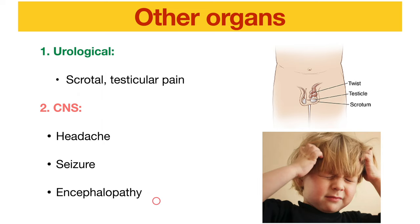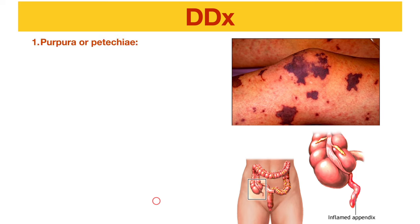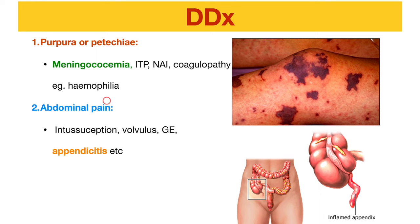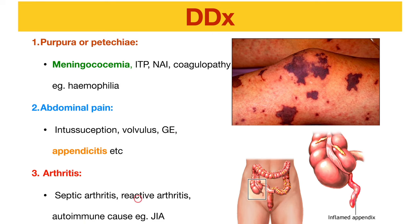For differential diagnosis: if you see purpura or petechiae, one of the most important conditions to consider is meningococcemia, as it is life-threatening. When you see non-blanchable purpura, first think about meningococcemia, especially with fever. Also consider thrombocytopenic causes like ITP, non-accidental injury if history is suspicious, or coagulopathy like hemophilia. For abdominal pain, consider surgical abdomen, intussusception, appendicitis, or gastroenteritis. For arthritis, consider septic arthritis, reactive arthritis, or autoimmune causes like juvenile idiopathic arthritis.